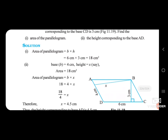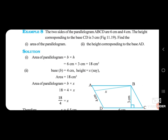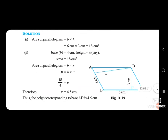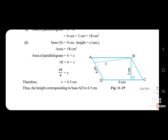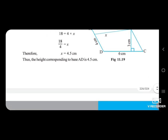Base AD is 4 centimetres. For the second part, area of parallelogram = b × h, so 18 = 4 × x. Therefore x = 18 ÷ 4 = 4.5 centimetres. Thus the height corresponding to base AD is 4.5 centimetres.